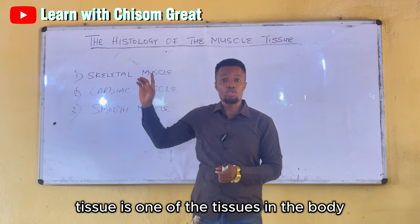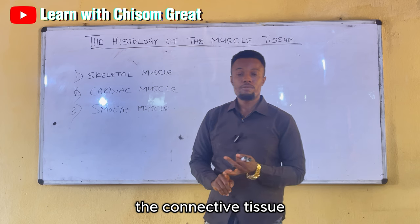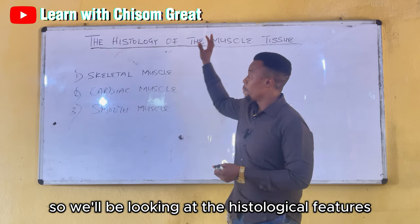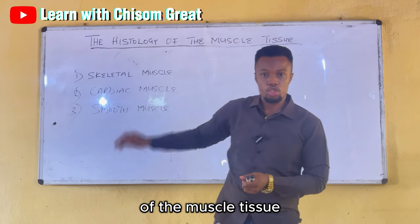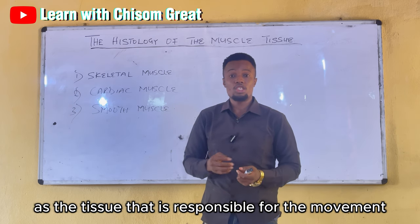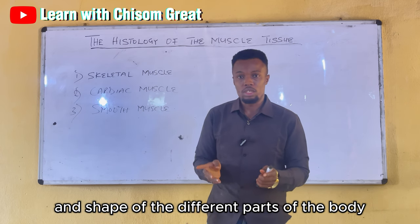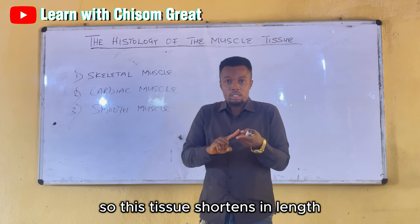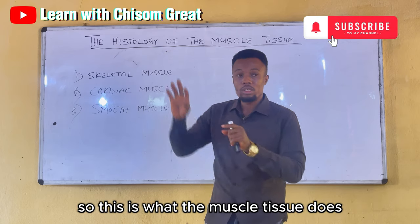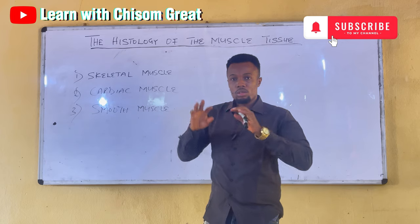The muscle tissue is one of the tissues in the body. We have the epithelial tissue, the connective tissue, the nervous tissue, and also the muscle tissue. The muscle tissue is defined as the tissue responsible for the movement and shape of the different parts of the body. This tissue shortens in length in order to contract, thereby producing movement.